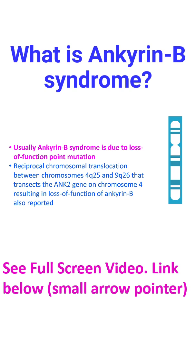In the family reported, a reciprocal chromosomal translocation between chromosomes 4Q25 and 9Q26 that transects the ANK2 gene on chromosome 4 resulted in loss of function of Ankyrin B. Some family members with ANK2 haploinsufficiency due to the translocation displayed clinical features of ANK2 syndrome.